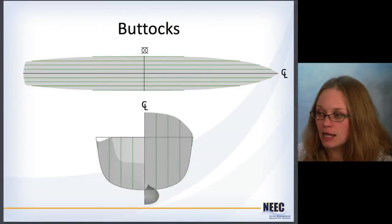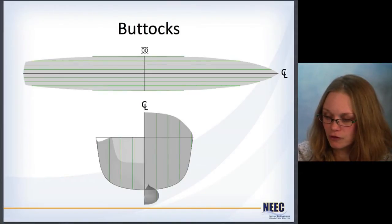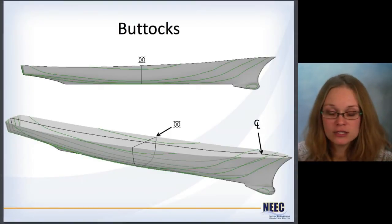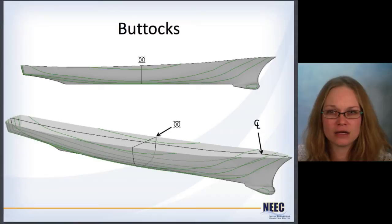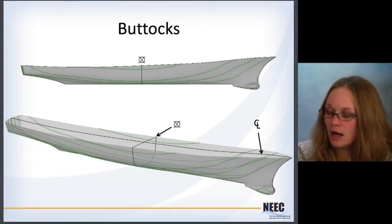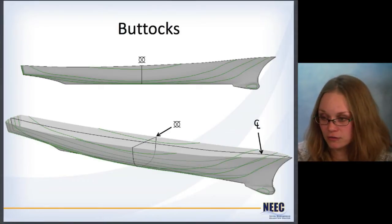If you take the center line plane and take a bunch of copies and send them port and starboard, you get what are called buttock lines. From the top and from the front or back view, you get straight lines. But if you look at it from the side or from this oblique view, you get these contours as you go from port to starboard. These lines are sort of like the lines of pressure on a weather map — the closer the lines are, the higher the wind. Similarly here, the closer the lines are on these slices, the more curvature there is; the farther apart they are, the less curvature there is.